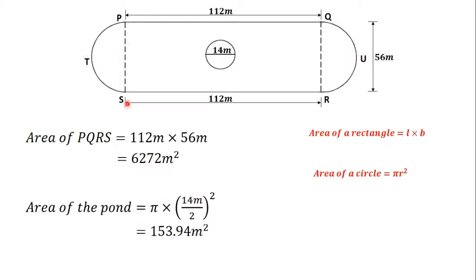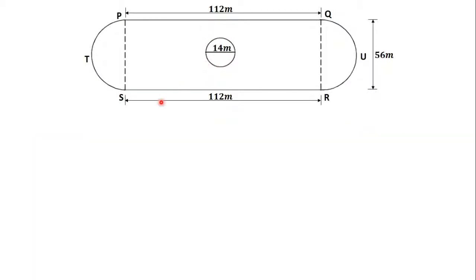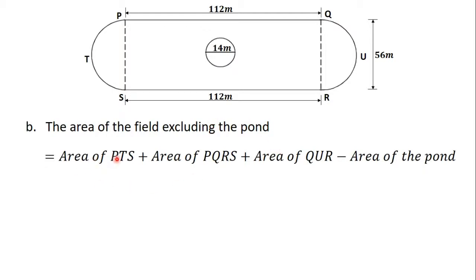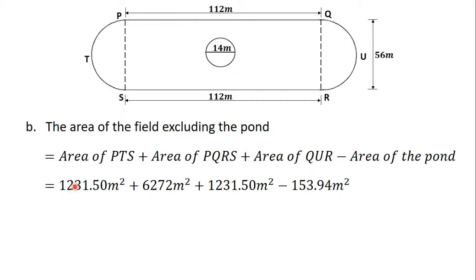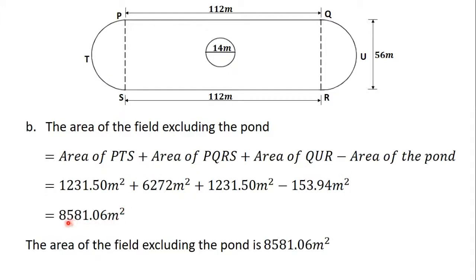We now have the area of the semicircle PTS, the area of the rectangle PKRS, and the area of the semicircle KUR, as well as the area of the pond. So the area of the field excluding the pond equals the area of PTS plus the area of PKRS plus the area of KUR, minus the area of the pond. That is 1231.50 + 6272 + 1231.50 − 153.94, which gives us 8581.06 meters squared. So the area of the field excluding the pond is 8581.06 meters squared.